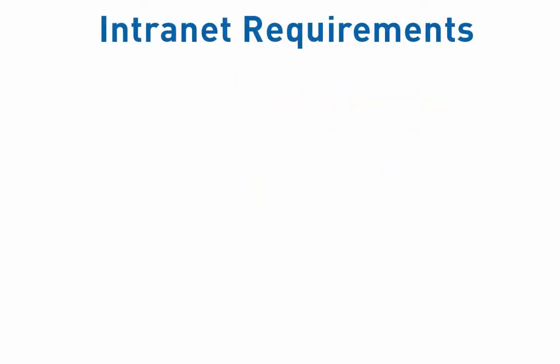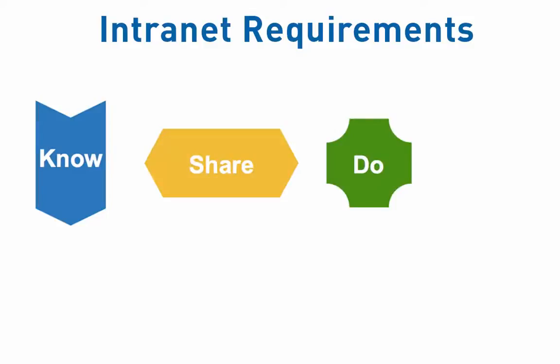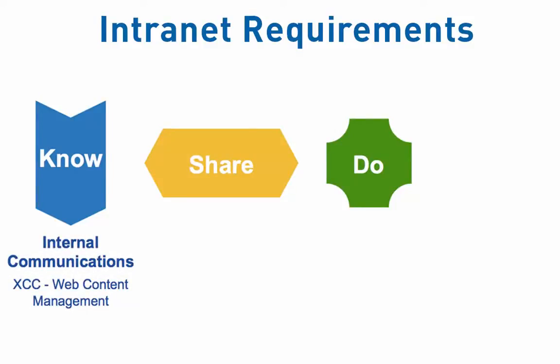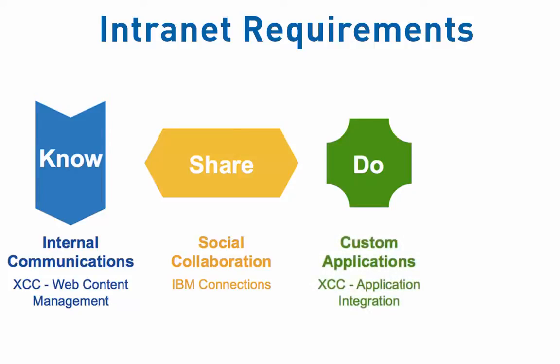Any intranet has to fulfill three requirements: Know, Share, and Do. What should employees know? Determining this is usually the responsibility of internal communications using a web content management system. Share — enterprise social networking using IBM Connections, sharing from peers to peers to collaborate and get their work done. And finally, Do — the integration of custom applications.